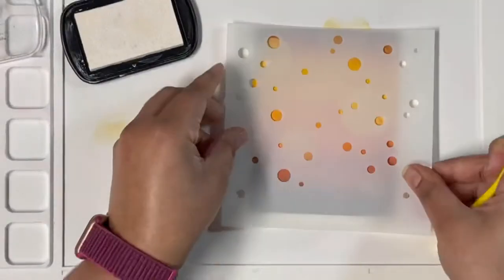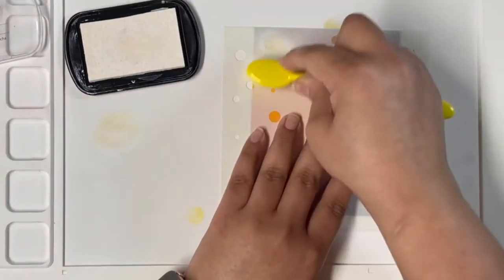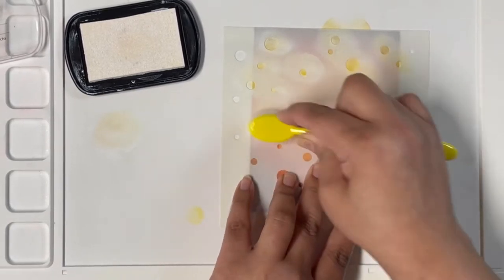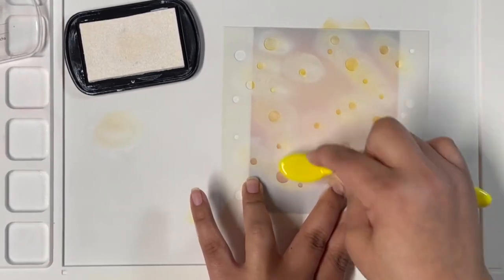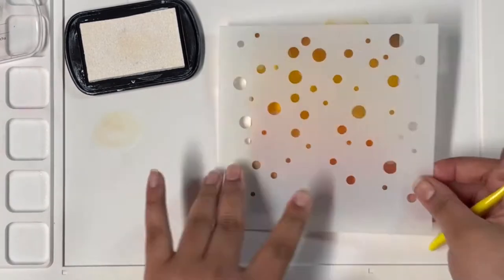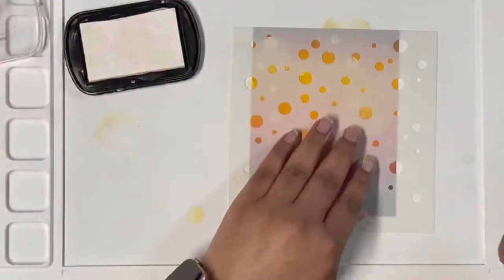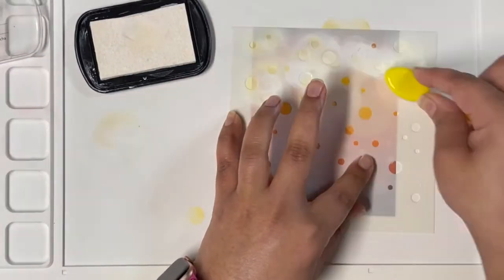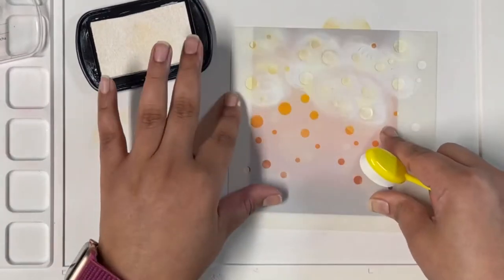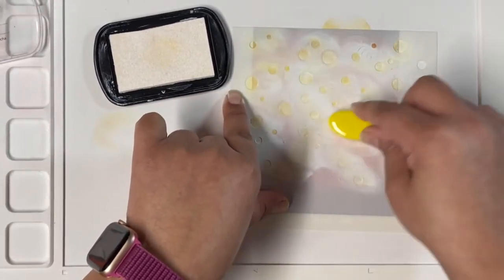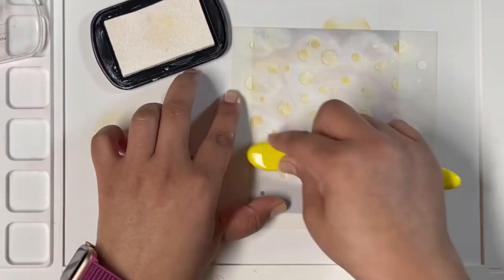I'm randomly placing the stencil onto the background and inking the circles. Next, I'm using one of the stencils from the Bubble Background Stencil pack, inking up the background with the same white ink, going a little heavy-handed. Lastly, coming in with my second stencil from the pack, inking heavy-handed with white pigment ink. This way you get three layers of stenciling with different opacity of circles, and I love how this turned out.